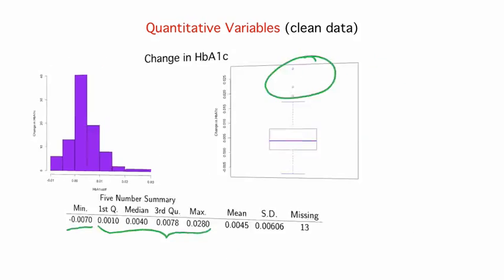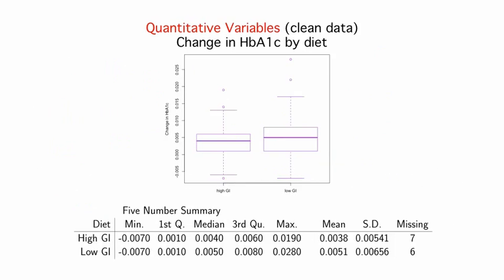An even more useful representation is to look at these changes in HbA1c by diet. It seems that the highest values are for the low GI diet, and the median and the mean are also slightly higher for the low GI diet. But again, there's lots of overlap in the box plots, so these differences may not be statistically significant.